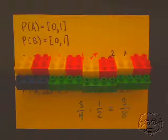Four times two, right? Among all those small bricks, how many are a red brick laid upon a green brick? One, two, three. Three out of eight.